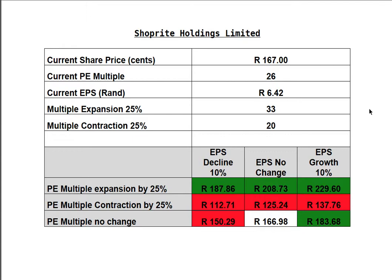If we look at ShopRite's current share price, it's about 167 Rand per share. The current market multiple of the ShopRite Group at this point is about 26 times earnings, and the current earnings per share as listed on Finance24 is 6 Rand 42 at the moment.